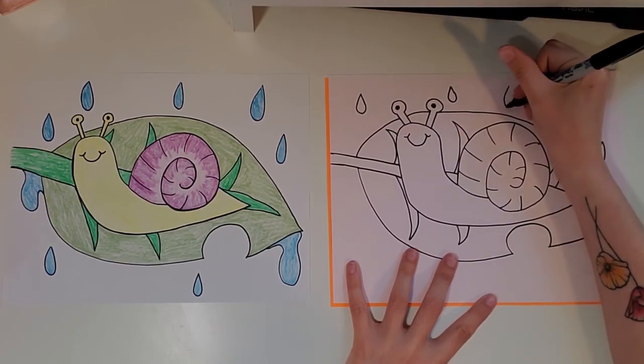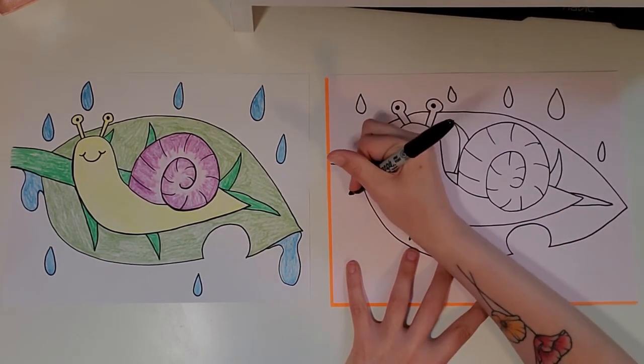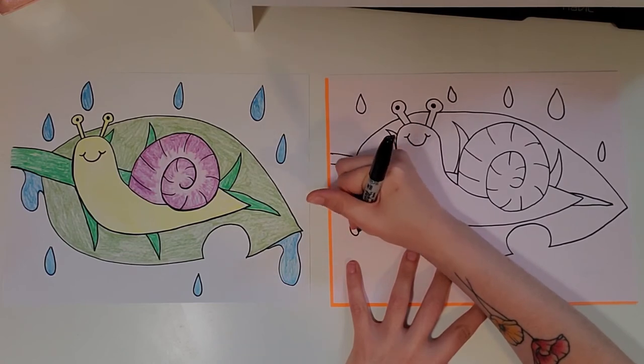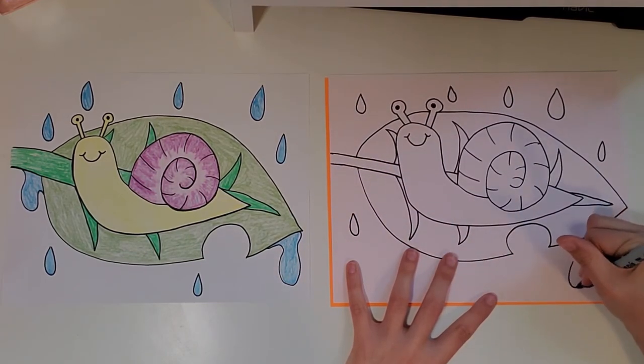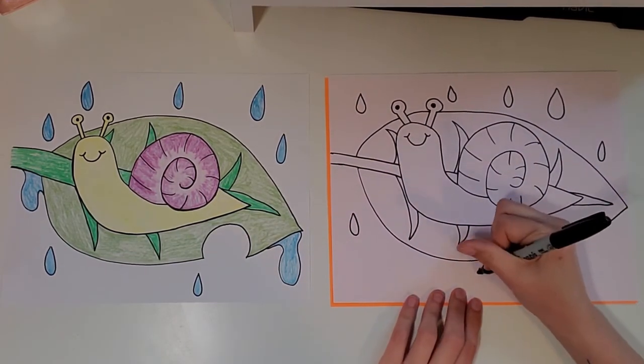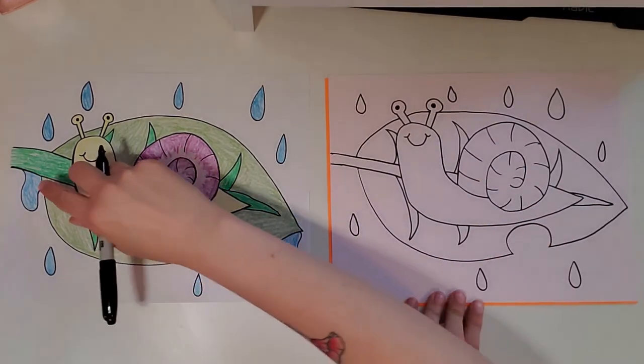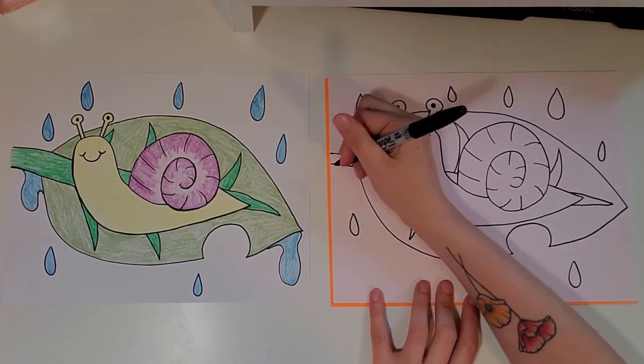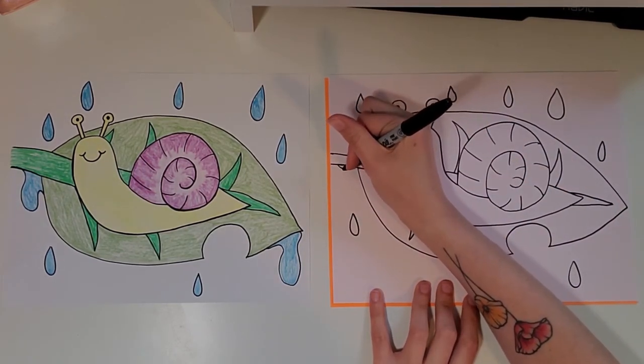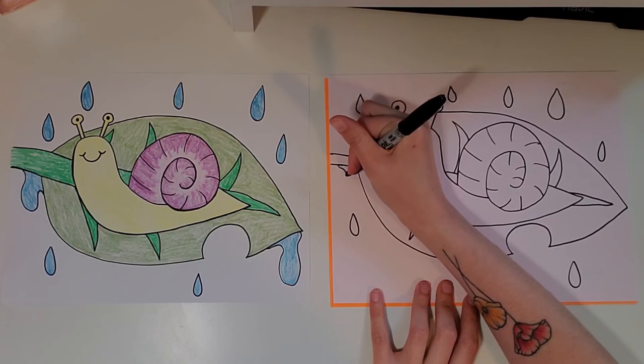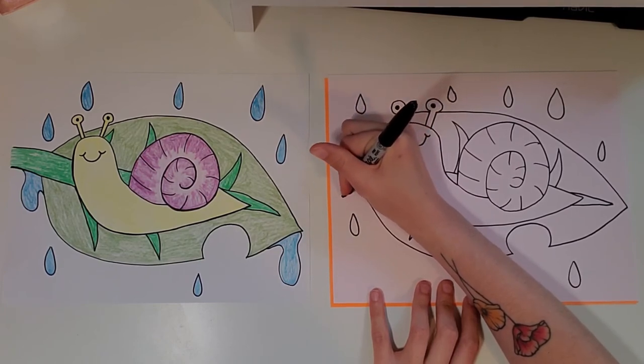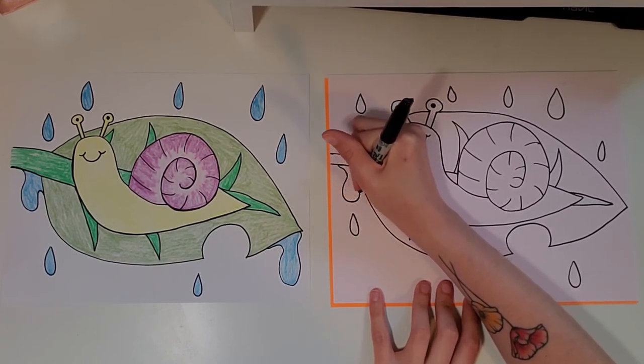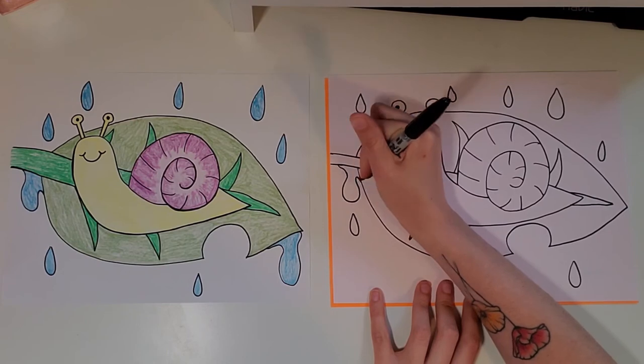I'm going to draw some underneath the leaf too. And then if you want to add these drips, like the water's on the leaf and kind of dripping off, what you're going to do is just kind of do like a little curvy line that then kind of expands out to make that teardrop shape and get small again.